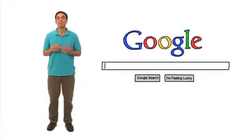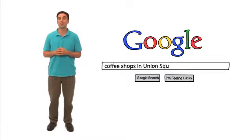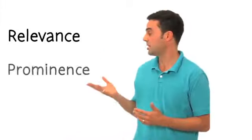There are a variety of relevance factors Google uses to match or answer your search query, in this case, locating New York coffee shops near Union Square. Three of the key factors are relevance, prominence, and distance.